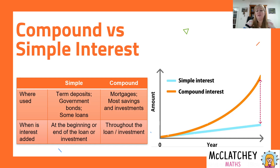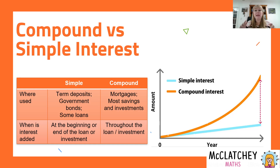With simple interest, we see it in very few real-life situations — something called a term deposit, which is a type of investment where you put your money in the bank, agree with the bank on a fixed interest rate, and your money sits there for an agreed period of time, maybe three years. At the end, you take your money out and they give you the interest agreed to at the beginning. Simple interest is also applied to government bonds.